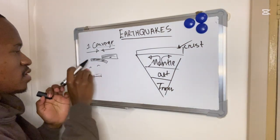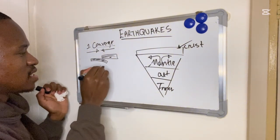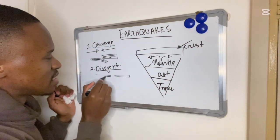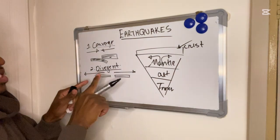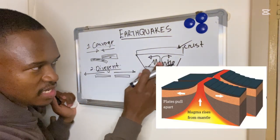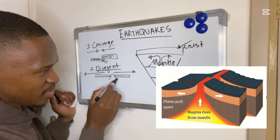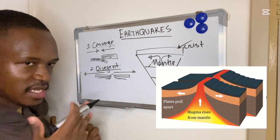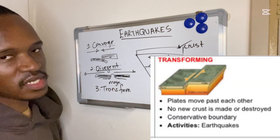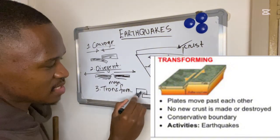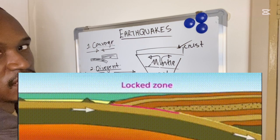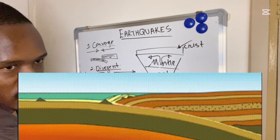The second type is our divergent boundary, where the plates are moving away from one another. What happens is that the magma or molten material from the mantle is going to rise and fill up this gap, which creates some tension and mild earthquakes. The third is our transform boundary, where the plates slide past each other. This also causes earthquakes, but the most destructive earthquakes are caused by convergent plate boundaries when the plates collide.